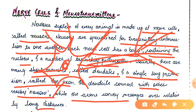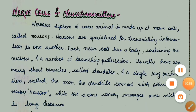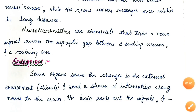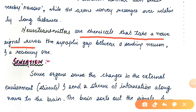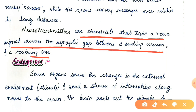Neurotransmitters are chemicals that take a nerve signal across the synaptic gap between a sending neuron and a receiving one. If you don't know about neurotransmitters, you can check my channel — I will provide the links in the description box and the comment section below.